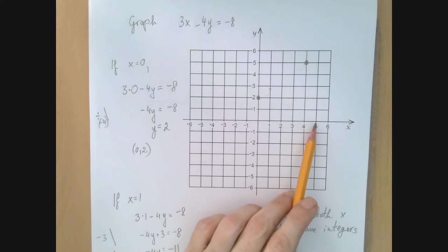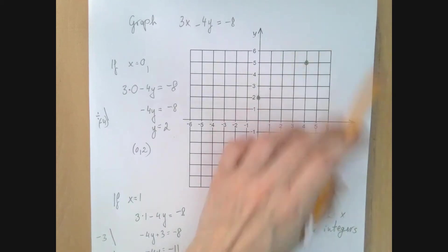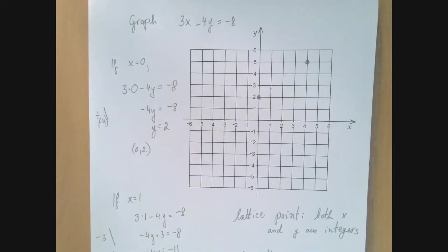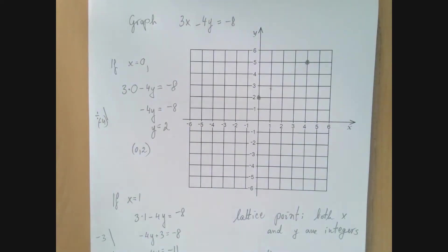5 will not behave nicely. The next number around here that will behave nicely is 8, but that's going to be off the picture. By 8, this line is going to be here. So it's best if we switch to negative 4. So let's see what happens then.